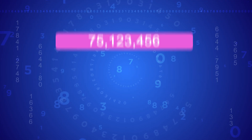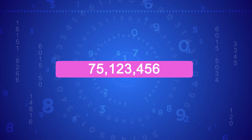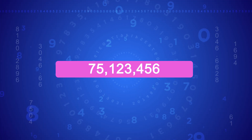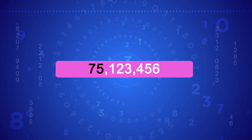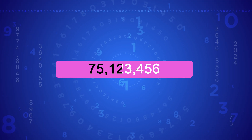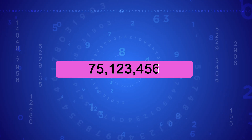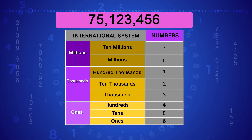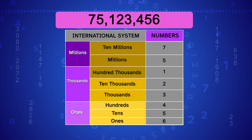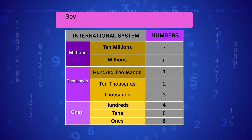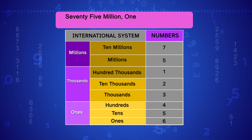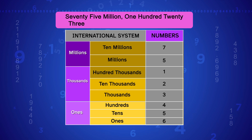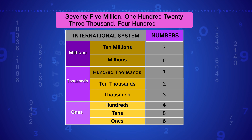Let's look at an example. Suppose we have the number 75,123,456. In the International System, we read it as seventy-five million, one hundred twenty-three thousand, four hundred fifty-six.